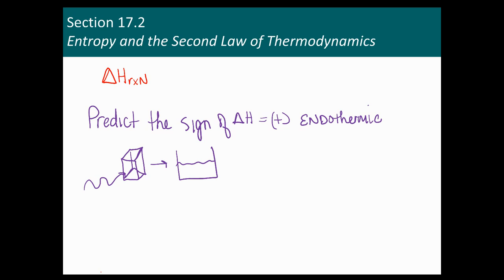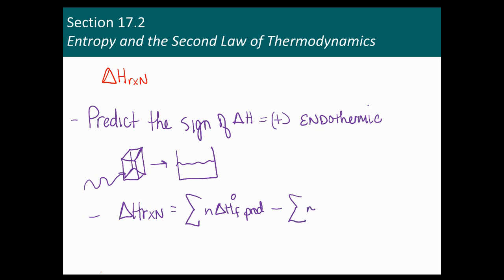One of the things we talked about in the previous videos was that there are certain things — like phase changes, combustion, and dissolving of salts — that as students you should know whether they're endo or exothermic. The other thing we learned was that we can find delta H of reaction by taking the sum of the delta H of formation of products with their coefficients in mind, minus the sum of the delta H of formation of reactants.